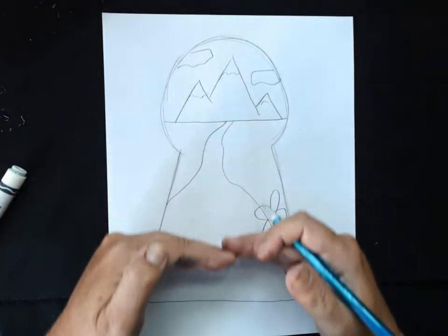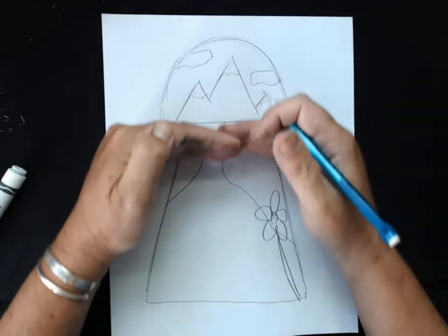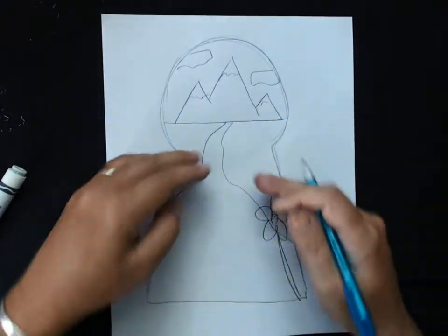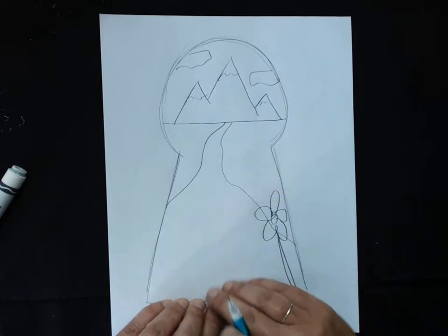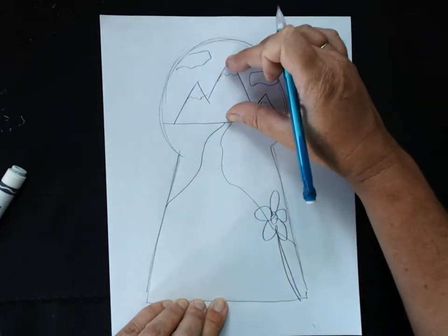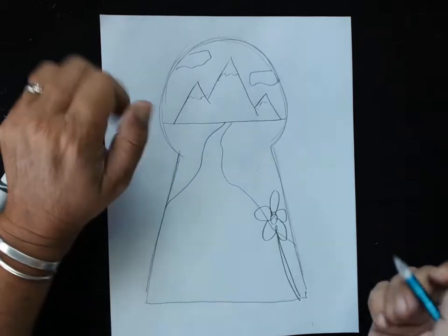Just know that it looks much better if the things that are coming towards you, things that are closer to you, are down at the bottom of your paper. As things go up your paper, they get smaller because they look like they're really far away.